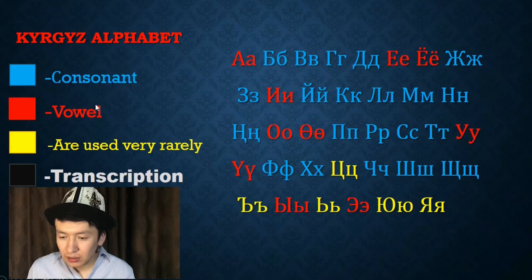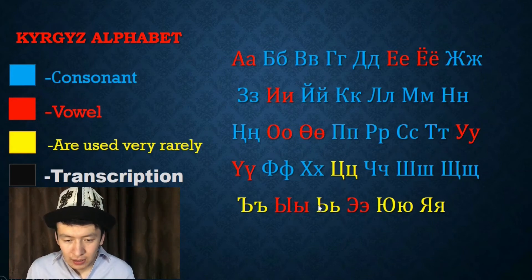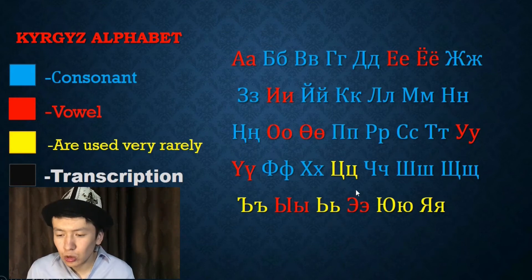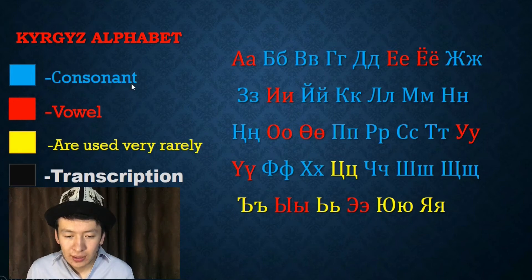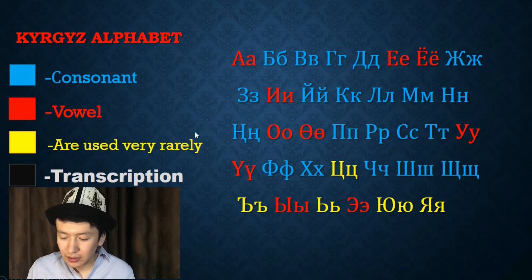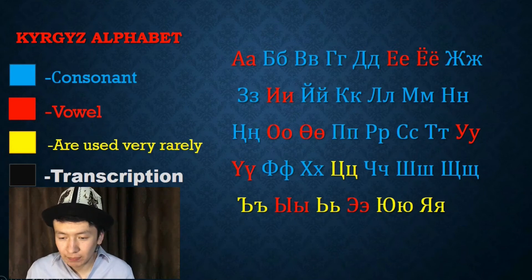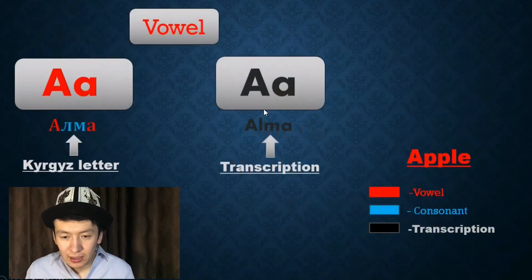Here you can see the yellow letters. The yellow letters are used very rarely. Consonant is Ünsüz tübıştar. Vowel is Ündüü tübıştar. And here you can find out the transcription. Let's start.